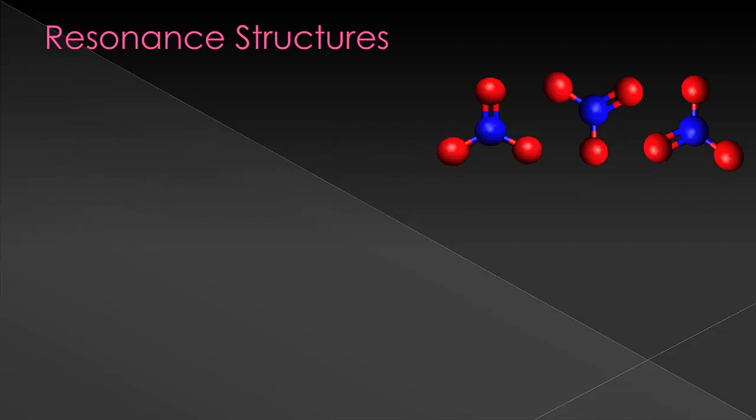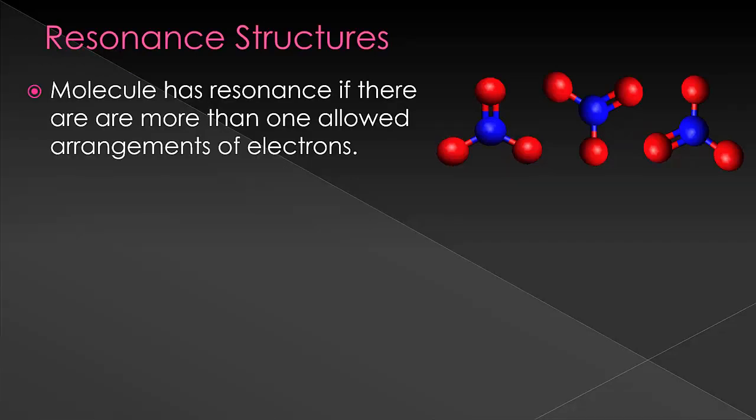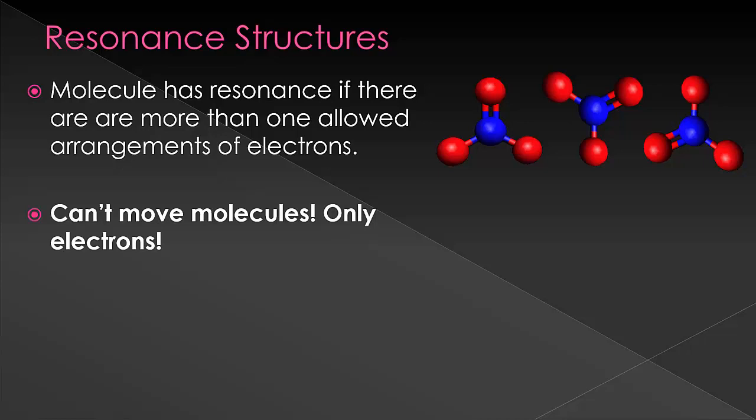Let's first define what resonance is. What do I mean when I say if there is more than one allowed arrangement of electrons? We are going to look at examples where we need to put in a double bond to make the proper Lewis structure. However, what we will see is that there are two or more ways of doing this and all are identical in stability. The molecule will not simply choose one of these, but rather it will be an average of all of these structures.